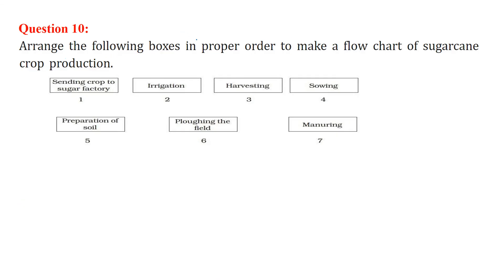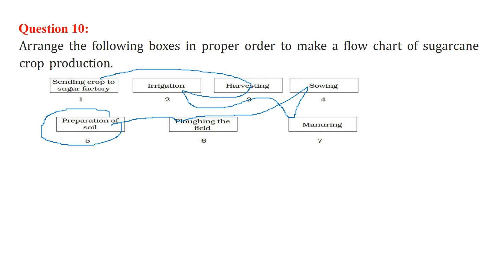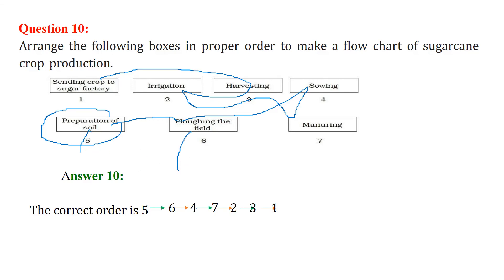Arrange the following boxes in proper order to make a flow chart of sugarcane crop production. The correct order is: preparation of soil, then plowing the field, then sowing, then manuring, then irrigation, then harvesting, then sending the crop to the sugar factory.